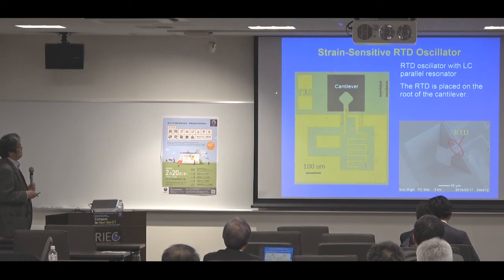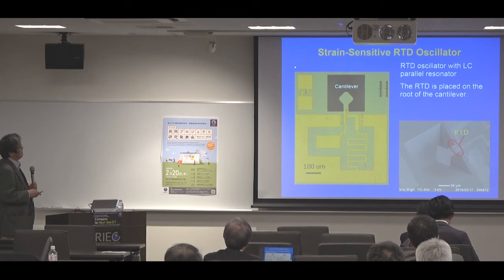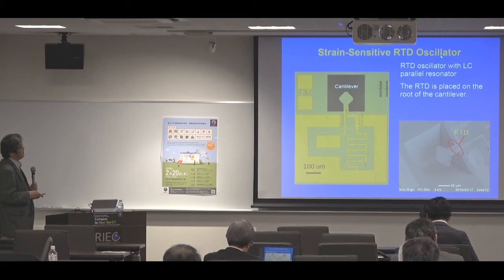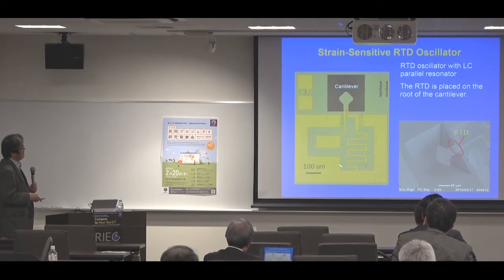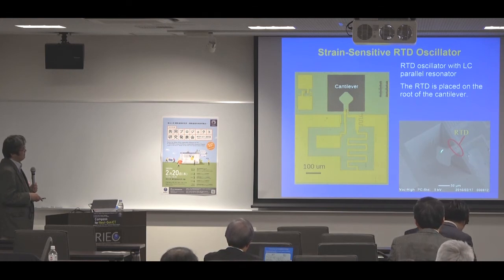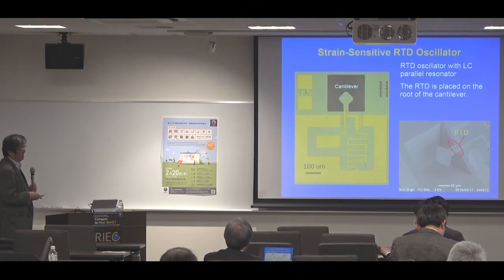This is our first example: a strain sensor. For this strain sensor, we fabricated a strain-sensitive resonatomic diode oscillator. This is a microphotography image of the fabricated device. It consists of an LC parallel resonator and a cantilever. The resonatomic diode is placed at the root of the cantilever, as shown in this SEM image. When the cantilever moves, strain is induced on the RTD.